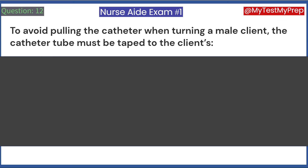To avoid pulling the catheter when turning a male client, the catheter tube must be taped to the client's: A. Bed sheet. B. Upper thigh.